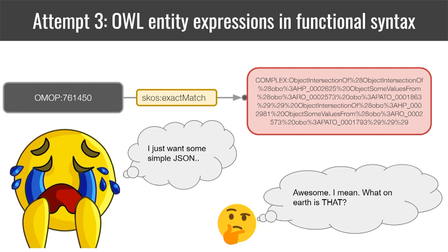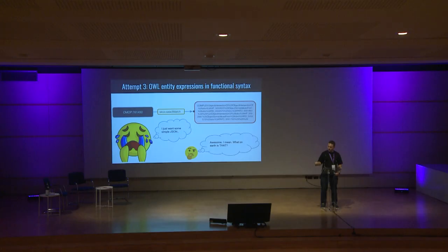But then we're losing a lot of people — most people dealing with mappings will say: I don't really care about OWL, I just want something simple, I want some simple JSON. Again we haven't served all those people, and of course it's super complex, error-prone, and ugly.